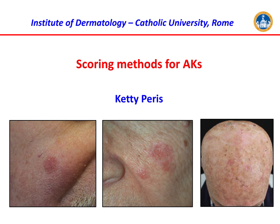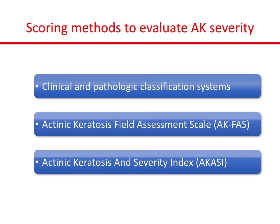Welcome to this podcast on scoring methods for actinic keratosis. The scoring methods to evaluate AK severity include the most common clinical and pathological classification systems and two novel scoring systems: the actinic keratosis field assessment scale, the so-called AK-FAS, and the actinic keratosis and severity index, the ACASY score.